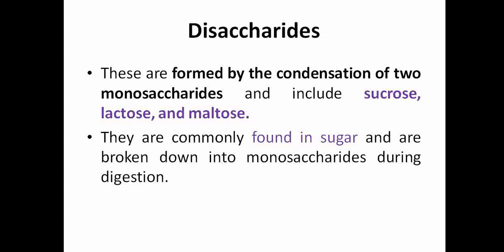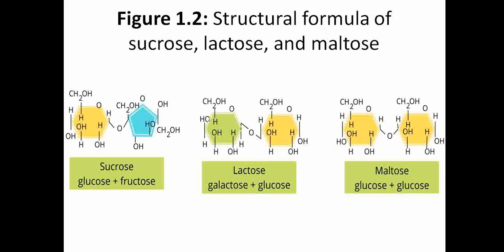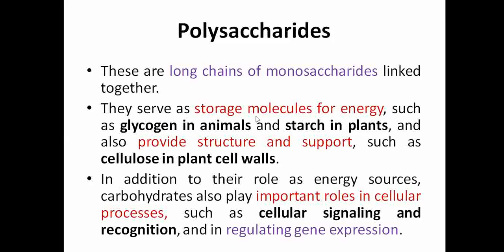Disaccharides are formed by combining two monosaccharides. Examples include sucrose, lactose, and maltose, mostly found in sugars. When broken down, they yield monosaccharides — for instance, glucose and fructose combine to give sucrose. The same applies to lactose and maltose.